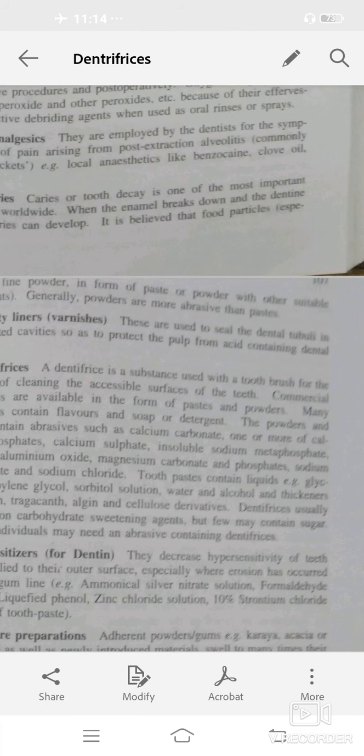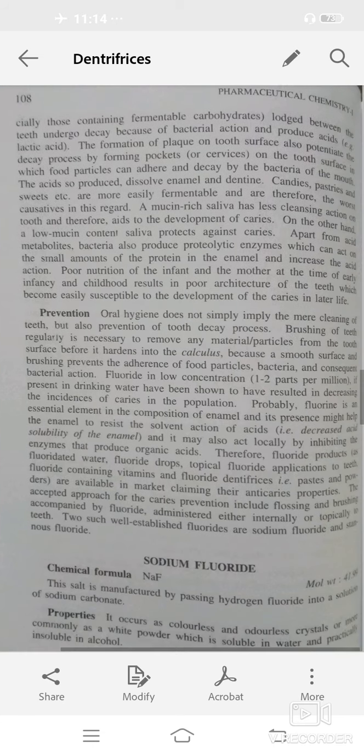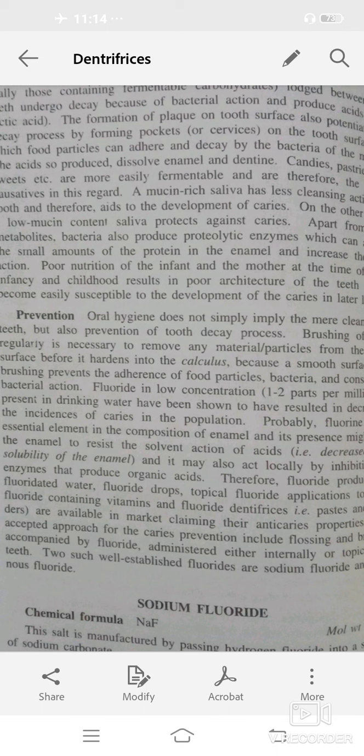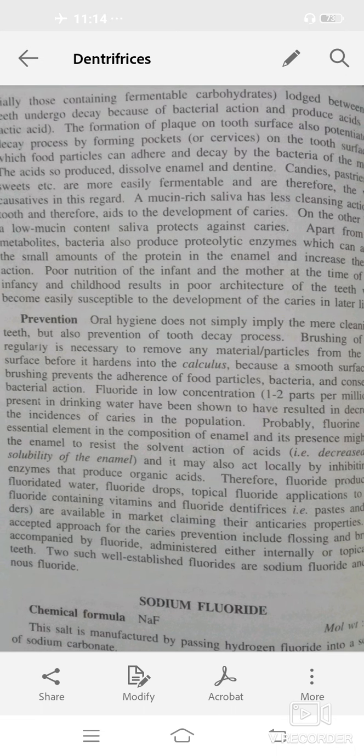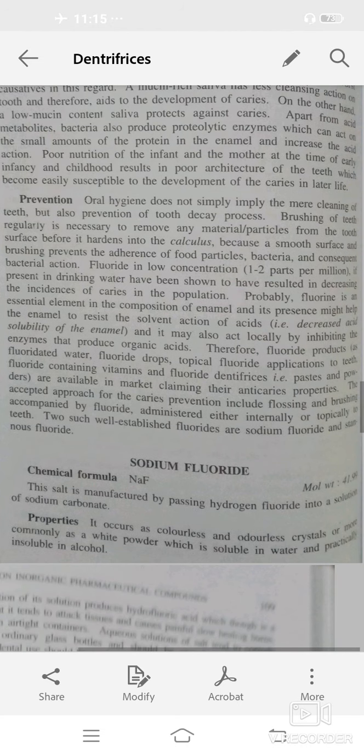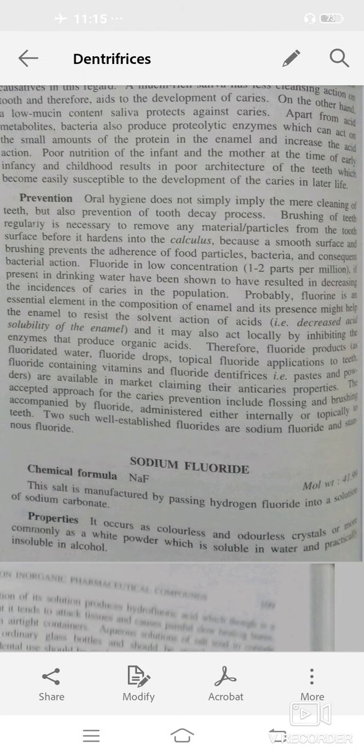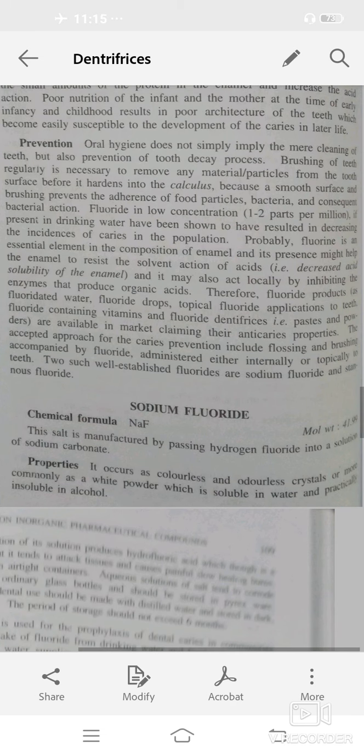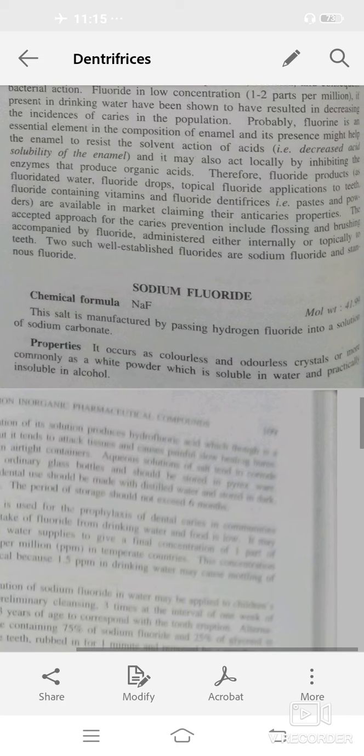For prevention, first is brushing of teeth to remove any particles from teeth. Other is fluoride. Fluoride in low concentration if present in drinking water also has an effect on teeth. Fluoride products like fluoridated water or drops, topical fluoride applications to teeth, or different pastes and powders are used for anti-caries properties. First compound is sodium fluoride, NaF. It's colorless crystals or white powder, soluble in water and insoluble in alcohol, used for prophylaxis of dental caries.